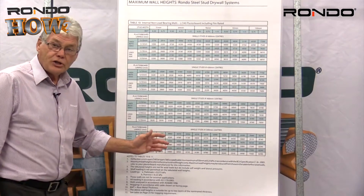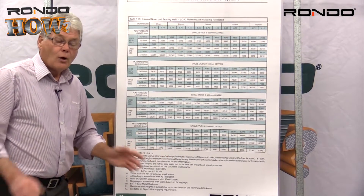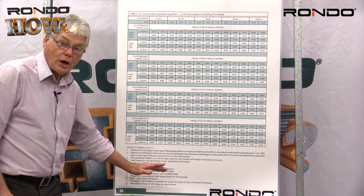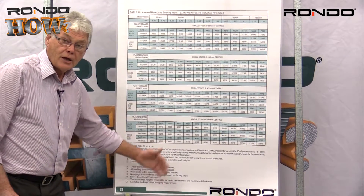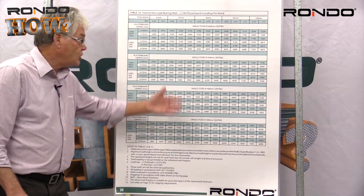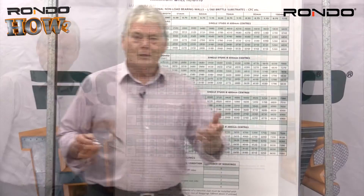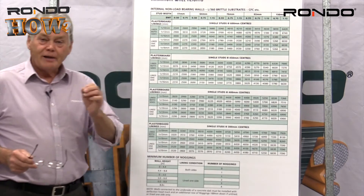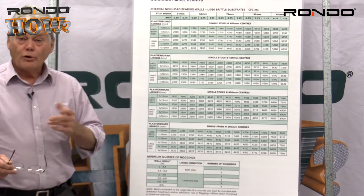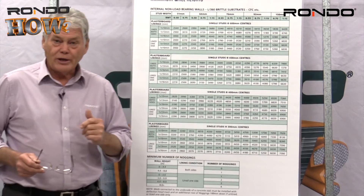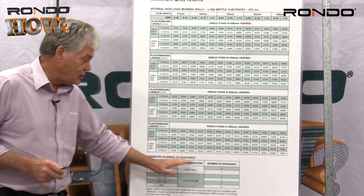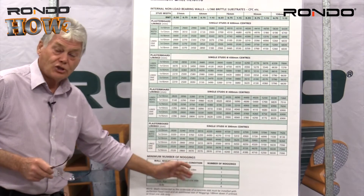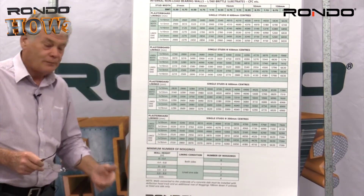When using this chart, always read the notes area that is associated with the charts. Customers often ask about nogging requirements. At the bottom of Table 7 in the Rondo professional manual you will find the information you're looking for. There's a chart regarding noggings.